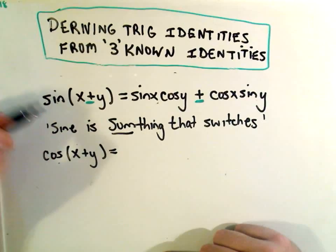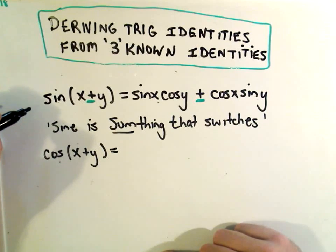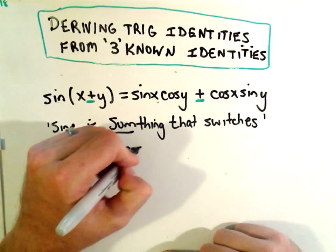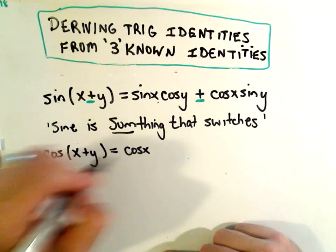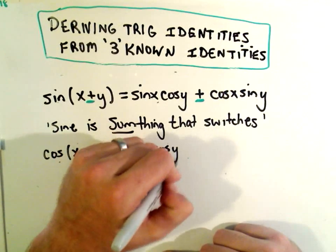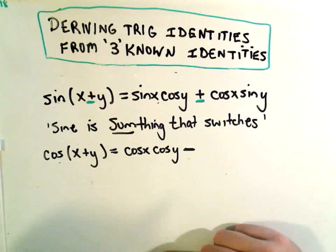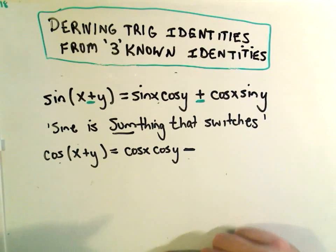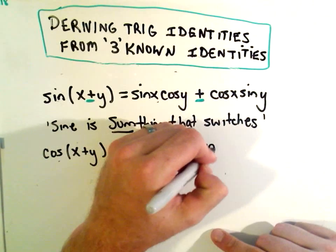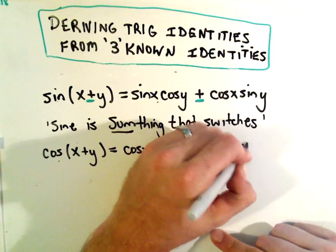To me, cosine of x plus y, I remember it's sort of the opposite. So cosine doesn't switch, so it stays cosine x cosine y, and the plus actually turns into a minus. Again, this idea to me that it's opposite. And then we get sine x sine y.